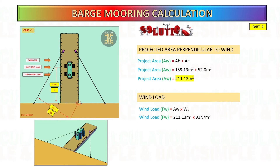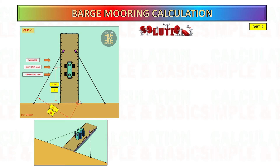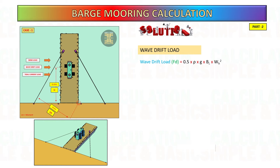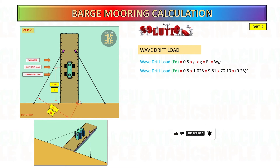Next, calculate the wind load. To get this, multiply the projected area by the wind velocity pressure: 0.5 times the density of sea water. Then calculate the wave drift load by multiplying 0.5 times the density of sea water, gravity, the length of the barge, and half of the significant wave height squared.